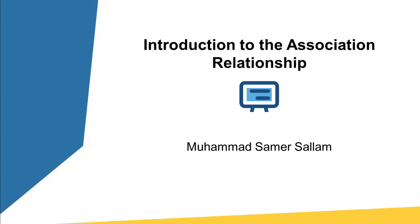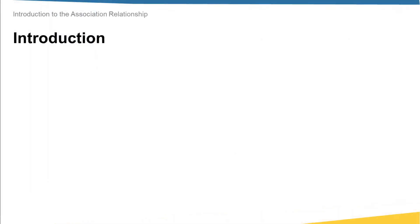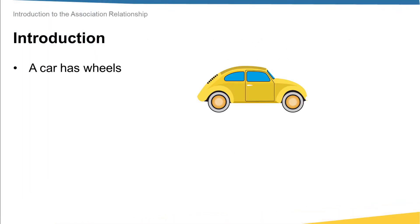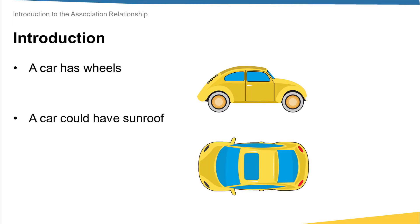Hi everyone, and you are welcome to the introduction to the association relationship lecture. Let's start this lecture by a quick example. We know that in reality a car has wheels. Also, we know that a car could have a sunroof or there could be no sunroof, and here it's an optional relationship.